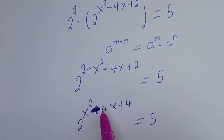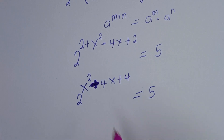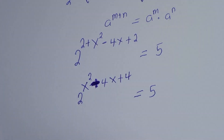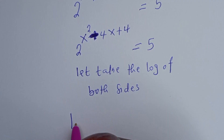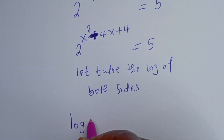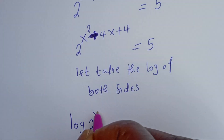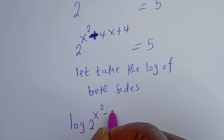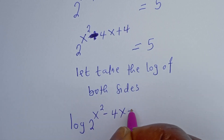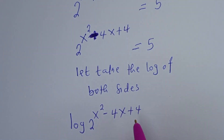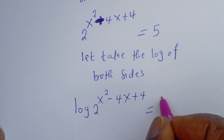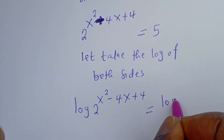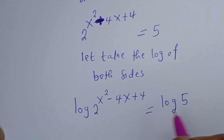Then these can be combined and written as 2 to the power of 2 plus s squared minus 4s plus 2, is equal to 5. Simplifying the exponent, this becomes 2 to the power of s squared minus 4s plus 4, is equal to 5.